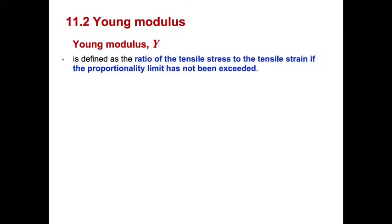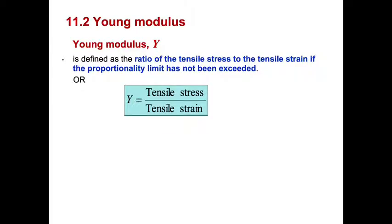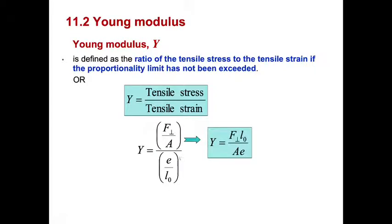What is Young's modulus? Young's modulus, symbol is Y, is defined as the ratio of the tensile stress to the tensile strain if the proportionality limit has not been exceeded. Mathematically, Y is equal to stress over strain. We learned before that stress is force over area and strain is extension over original length. So, mathematically, when we rearrange them together, you will get these equations. This is also a scalar quantity because we know that stress is scalar, strain is scalar. The Young's modulus is a scalar quantity. We don't need to know the direction of the force. And the unit for Young's modulus is Pascal.